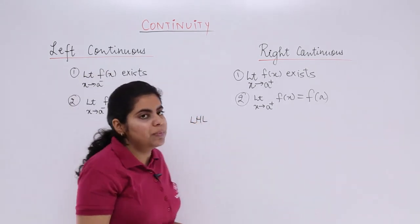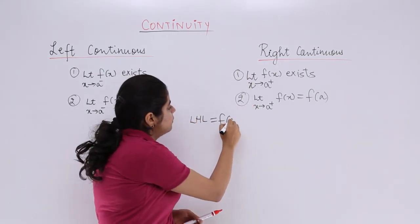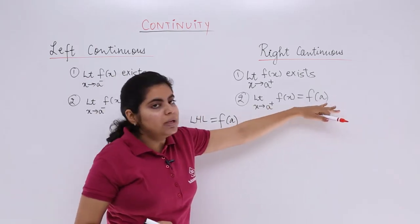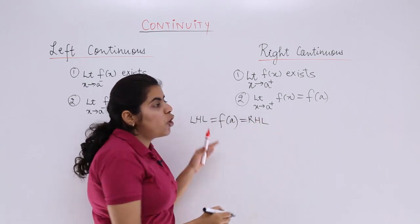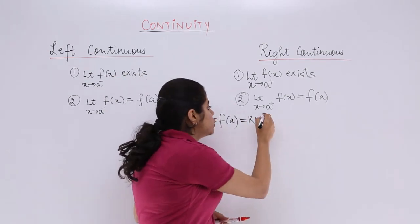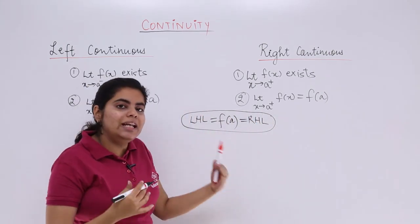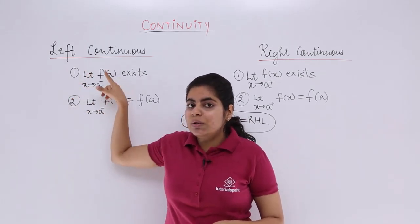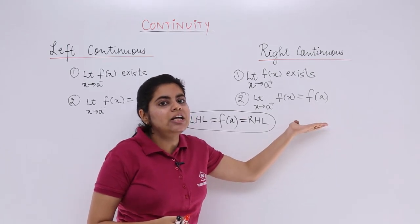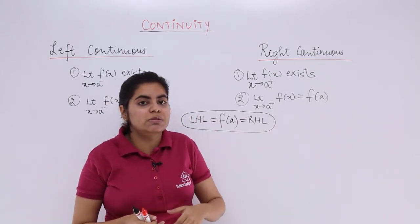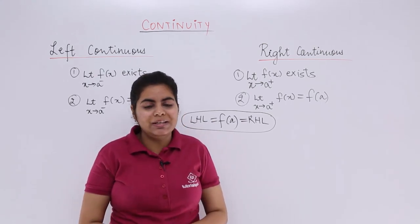When you equate both these things, LHL should be equal to f(a), the function value. RHL should also be equal to the function value. That means LHL equals f(a) equals RHL, and all these, if they exist, should be finite. So when you club both conditions together, you get a continuous function. Individually they are not fully continuous — left continuous means only the left side, right continuous means only when approaching from the right. But when a function is both left continuous and right continuous, the function is actually a continuous function.